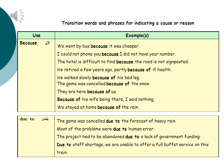In the next four slides, we shall look at some basic transition words and phrases used for indicating a cause or reason. The first one is 'because', which is a conjunction used to connect two clauses. Examples: We went by bus because it was cheaper. I couldn't phone you because I didn't have your number. The hotel is difficult to find because the road is not signposted.